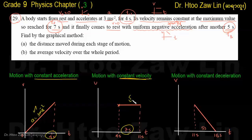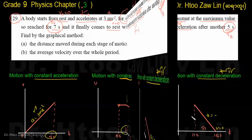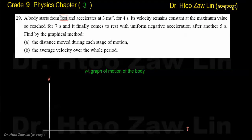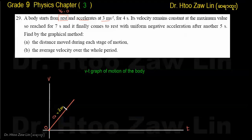We observe: constant velocity phase, then constant acceleration phase. The initial velocity is 0. The acceleration is 3 meters per second squared. So the three phases are: accelerated motion, constant velocity, and deceleration to rest.